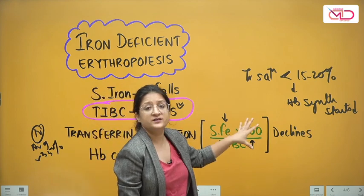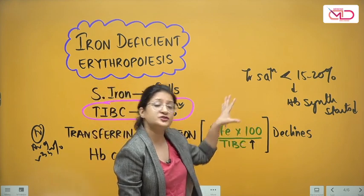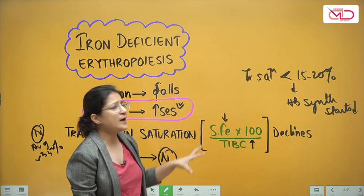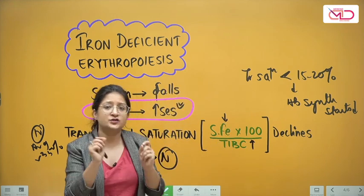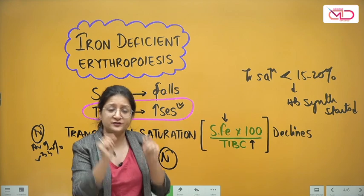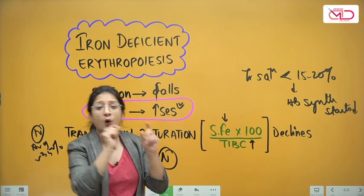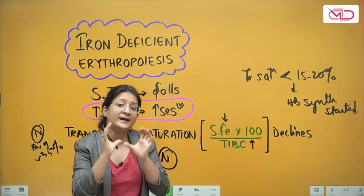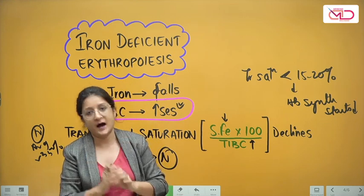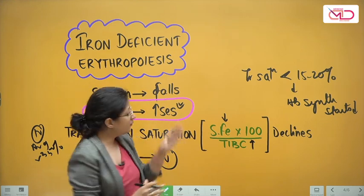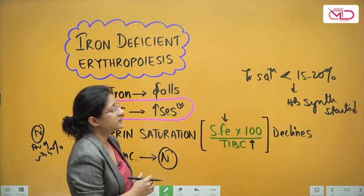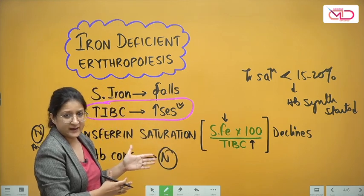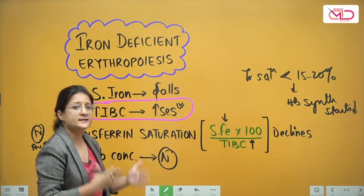Once transferrin saturation falls below this threshold, the first evidence of anemia will start appearing in the peripheral smear in the form of under-hemoglobin synthesis. If no correction is given even at this point — the diet does not improve, the losses continue, and the stores keep getting depleted — frank iron deficiency anemia will develop.